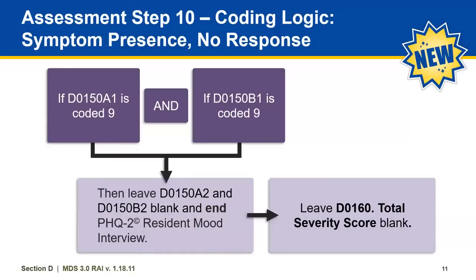Think about a scenario where a resident provided a nonsensical response to the first two questions. In that case, the symptom presence for the first two items is coded with a 9, and symptom frequency column 2 is left blank. So if both D0150A1 and D0150B1 are coded 9, leave D0150A2 and D0150B2 blank, and end the PHQ 2. Leave D0160 total severity score blank as well.